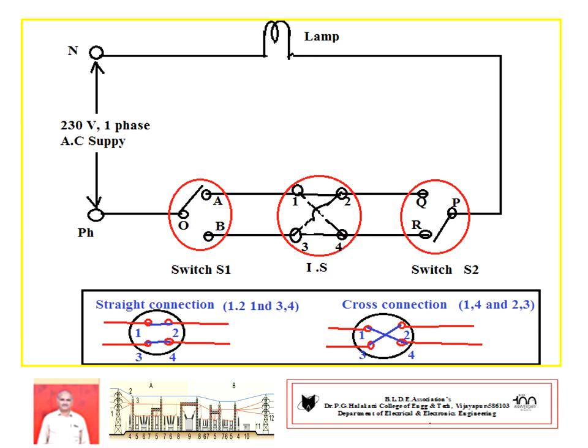First conduct the experiment for straight connection, then change to cross connection of the intermediate switch. An operating switch is provided — if kept in straight position, terminals are connected straight; if changed to cross, the terminals automatically change. In straight connection, it connects terminals 1-2 and 3-4. In cross connection, it connects terminals 1-4 and 2-3. You only change the switch position. You have to draw all three electrical circuits for three-way control.